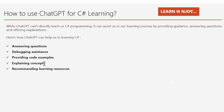Number four — explaining concepts: ChatGPT can help explain C# programming concepts such as object-oriented programming, inheritance, interfaces, or LINQ in a conversational and accessible manner, which may complement other learning resources. Number five — recommending learning resources: ChatGPT can suggest online tutorials, documentation, books, or video courses to help you learn C# more effectively. Specify your preferences and areas of interest, and ChatGPT will suggest accordingly. Remember to supplement learning with hands-on practice, interactive tutorials, and coding exercises.